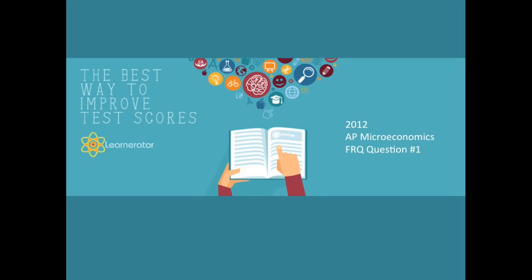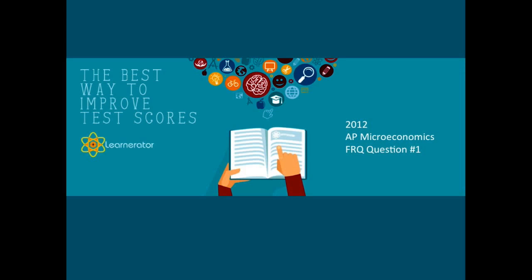Hey, it's Will from Learnerator, and in this video I'm going to walk you through the 2012 AP Microeconomics FRQ Question Number 1, which is related to a loss-generating monopolist. Similar to FRQ Question Number 1 of 2013 and 2014, this one relates to a monopolist, so we will be thinking about things like marginal revenue equals marginal cost and what are the implications of doing that. Let's go ahead and get started.